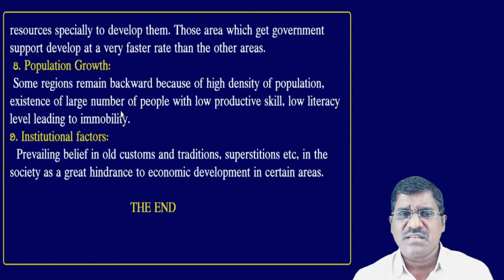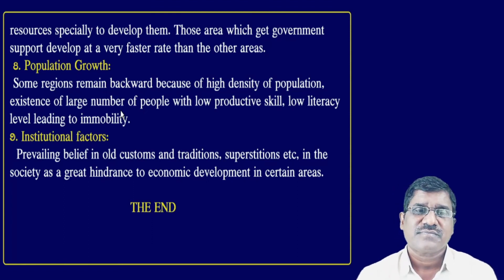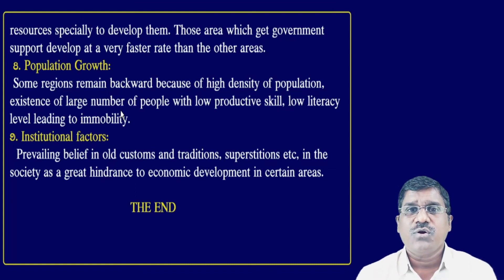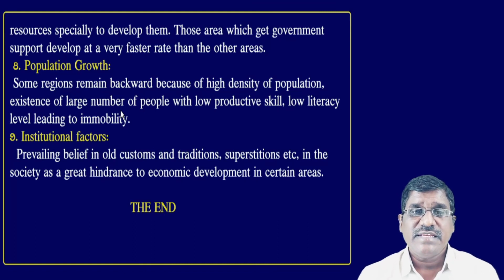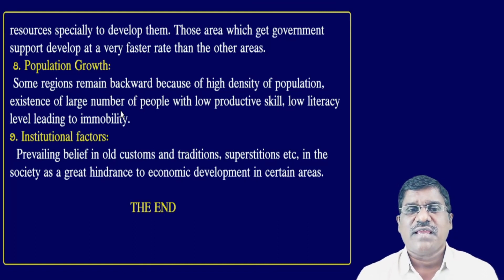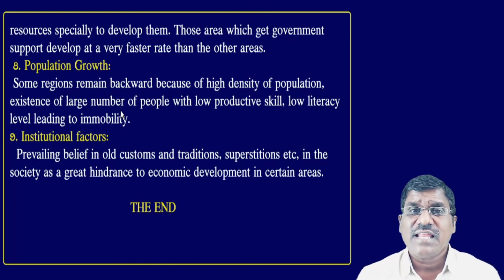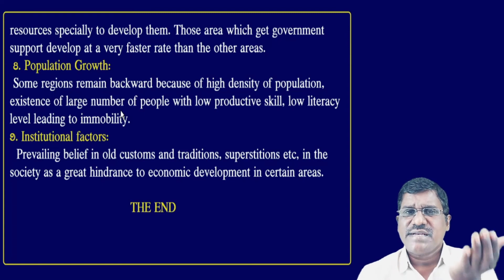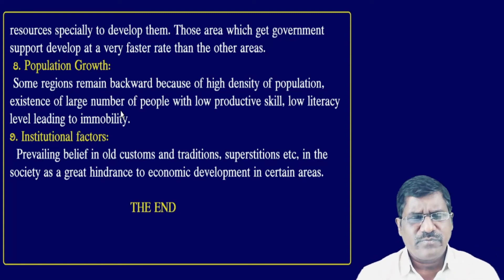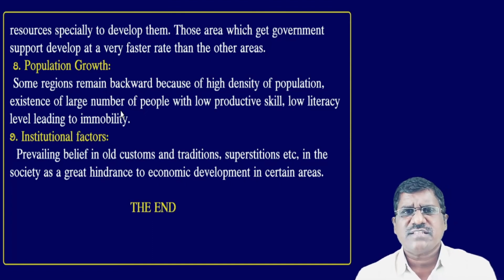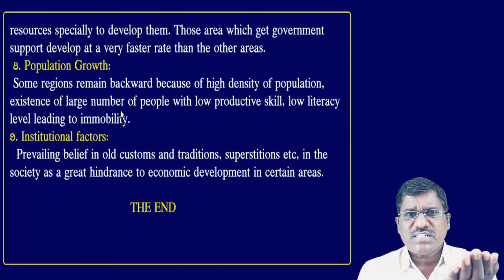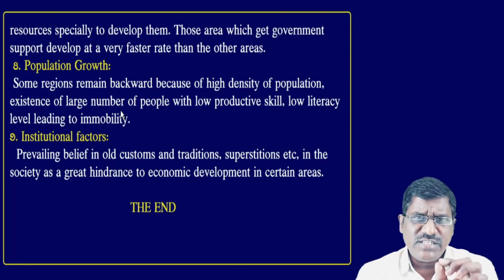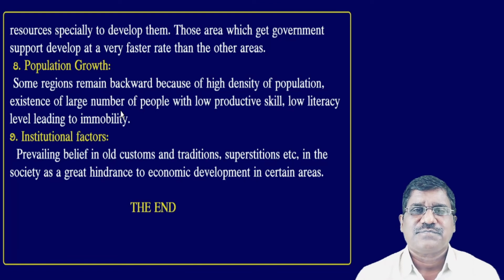The eighth cause is Population Growth. Some regions remain backward because of high density of population. The existence of large numbers of people with low productive skills and low literacy levels creates immobility. This is also one of the causes of regional imbalances. Some regions are developed and some are underdeveloped — whether you look at the country, state, or district level. For example, some districts are developed and some are underdeveloped, and some mandals are developed while others are not.